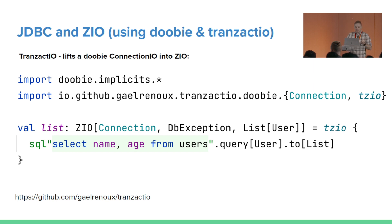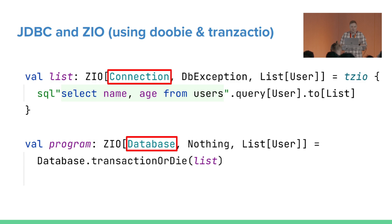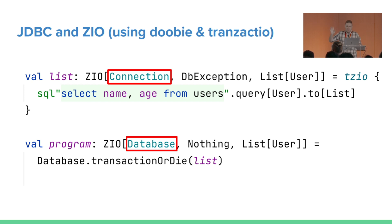Notice that the ZIO contains something called a Connection. This is not directly a JDBC connection, but a type provided by the Transactor.io library, specifying that to actually run this query we need to provide it at some point with a JDBC connection. To do this, we need to transact on this operation. The Transactor.io API provides various ways of executing this query, such as calling transactOrDie, which means in case of an error it will die on a fiber. Notice that when you transact on this operation, the Connection requirement gets eliminated — it gets satisfied.